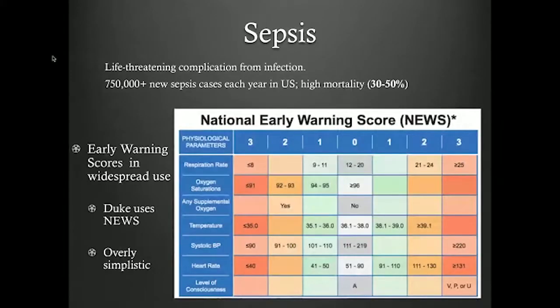What is sepsis? Sepsis is a life-threatening complication from infection. There are 750,000 new sepsis cases every year in the US, and there's a high mortality rate: 30 to 50% of people who get it die. Right now at Duke, the best thing we have to predict whether somebody has sepsis is this NEWS score. What the NEWS score does is look at things like heart rate, oxygen saturation, and systolic blood pressure, assigning points depending on what their values are, and if the total is over a certain amount, the patient is considered high risk.